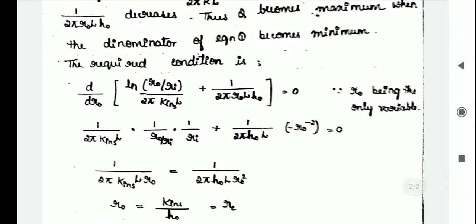1 divided by 2pi K insulated into L into 1 divided by R0 divided by Ri into 1 divided by Ri plus 1 divided by 2pi K H0 into L into minus of R0 raise to minus 2 equals 0.